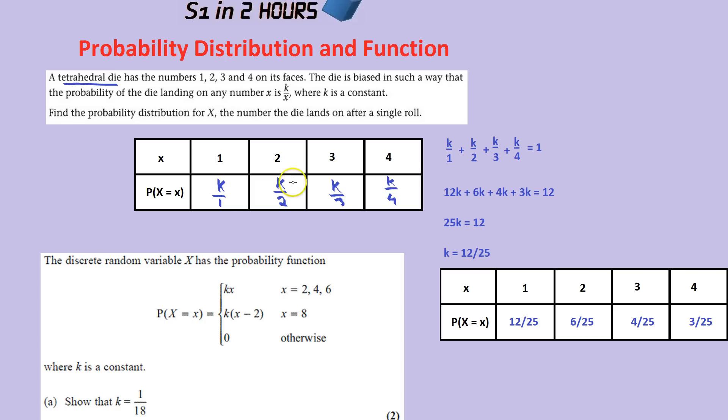Finally, we need to fill in the box to actually answer the question. And if we know that K is 12 over 25, that means that that divided by 1, when you divide by 1, it doesn't change anything. So that's just 12 over 25.